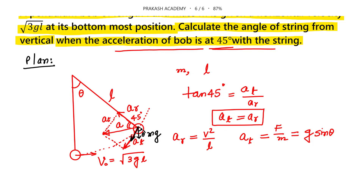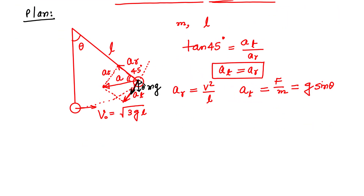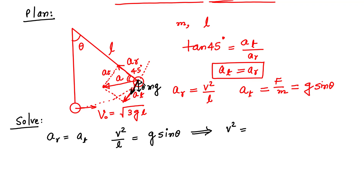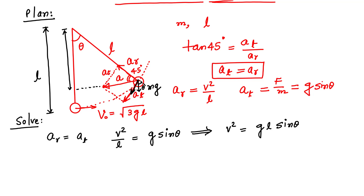Now let us use energy conservation to solve for theta. Since AT = AR, we have V²/L = g·sin(θ), giving V² = gL·sin(θ). For energy conservation, the height gained by the bob is L minus L·cos(θ), because the total string length is L and the vertical projection of the new position is L·cos(θ).